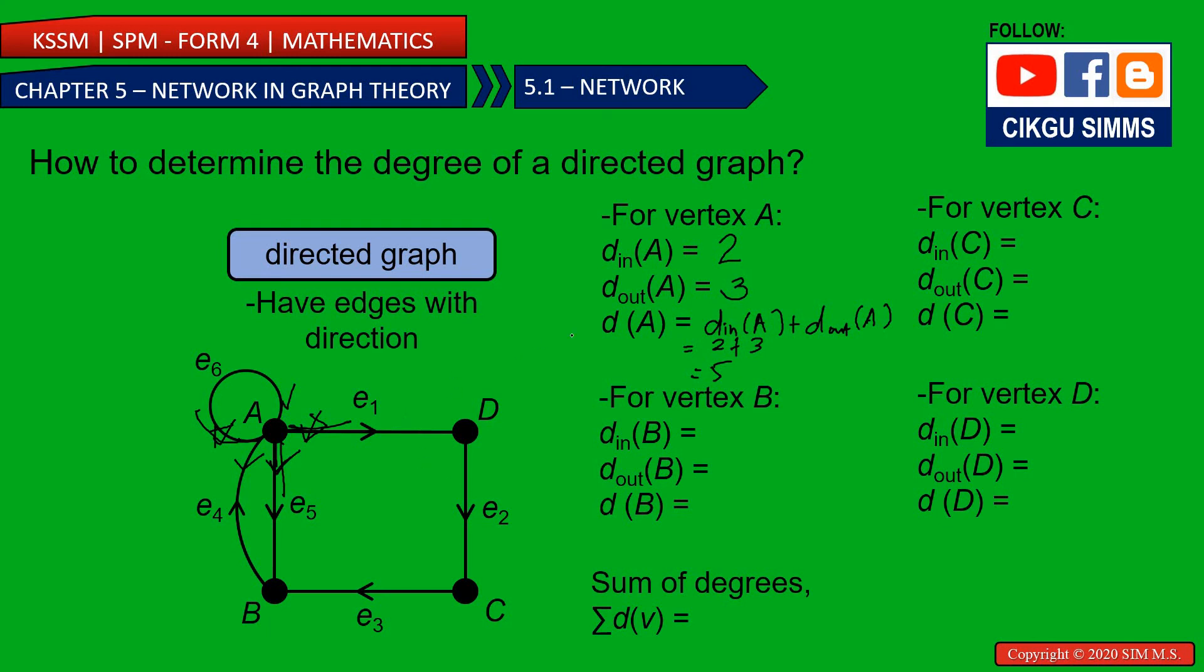So the same thing for vertex B. Let's see vertex B here. Degree in for B, so this one is in, this one also in, so we have two in, two degree in. How about degree out? We have one out, so degree out is one. And then the degree for vertex B is two plus one is three. So we can check, is it three? One, two, three. So it's three.